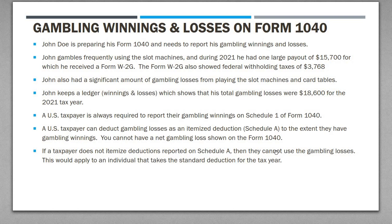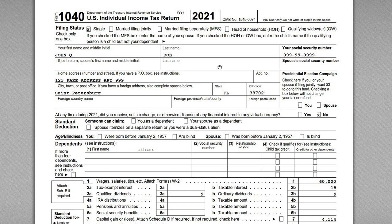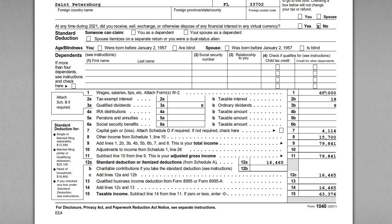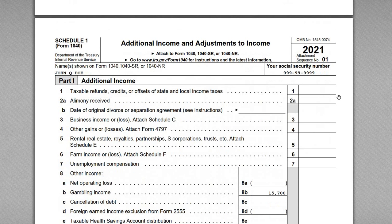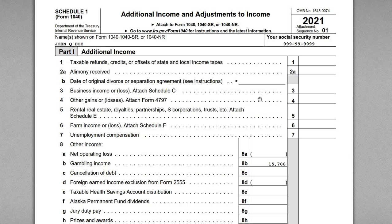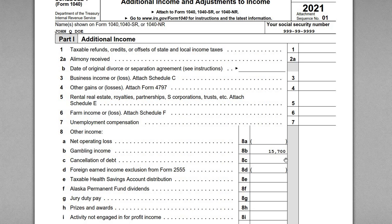Let's look at John's 1040. He has some other income — wages, investment income, capital gains — but we'll focus on the gambling piece. Going down to Schedule 1, Additional Income and Adjustments, line 8B is gambling income. That's where you see the $15,700 of gambling winnings from the W-2G reported.